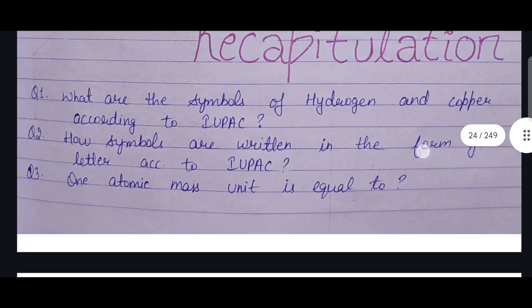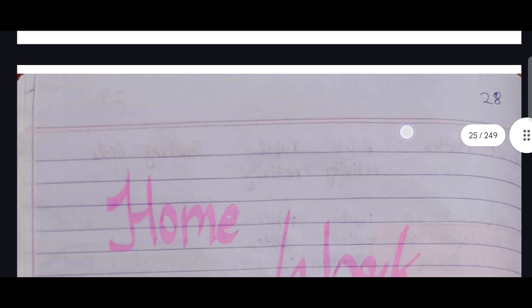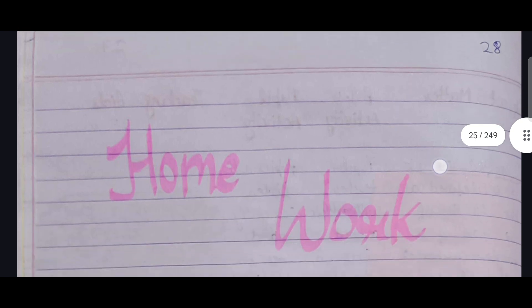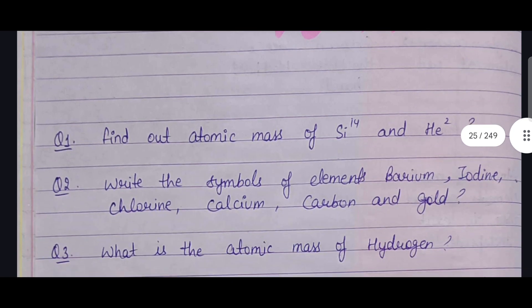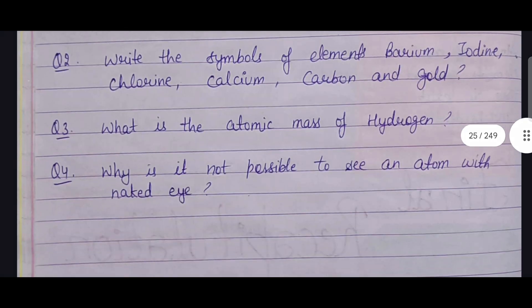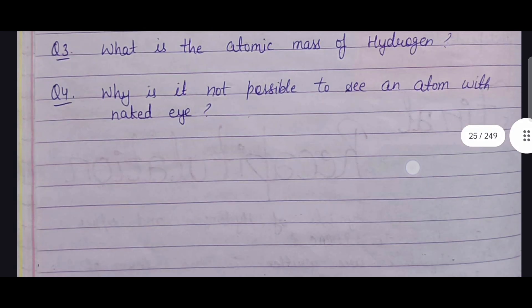At last, homework is given — something creative that engages the students. For example: find the atomic mass (some mathematical questions); write the symbols of elements barium, iodine, chlorine, calcium, carbon, and gold; what is the atomic mass of hydrogen; and why is it not possible to see an atom with the naked eye?